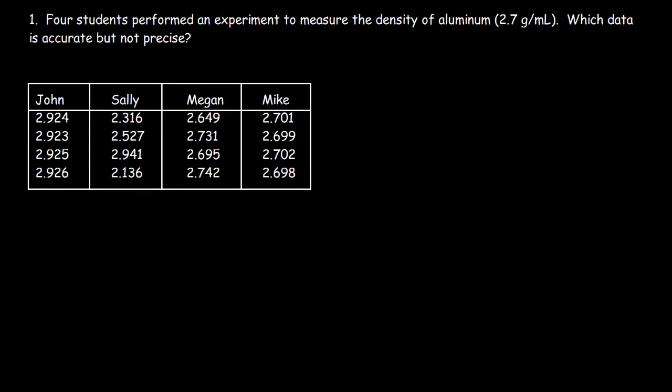What is the difference between accuracy and precision? Accuracy has to do with how close your data is to an accepted value — the closer your data is to the accepted value, the more accurate it is. Precision has to do with whether your individual measurements agree with each other. So accuracy is closeness to the accepted value, and precision is how close your data is with each other.